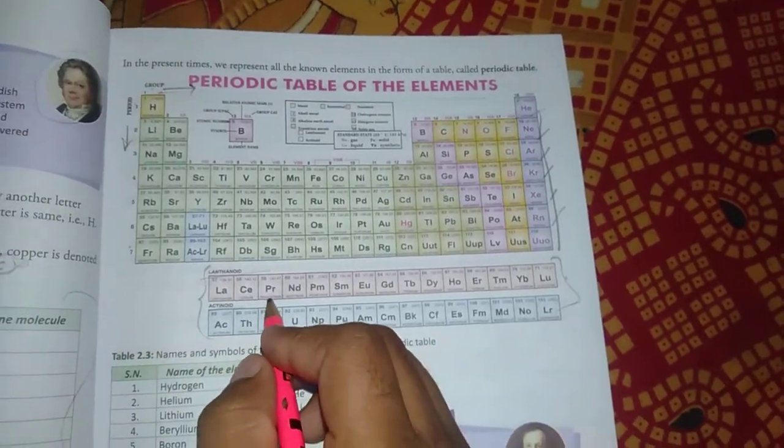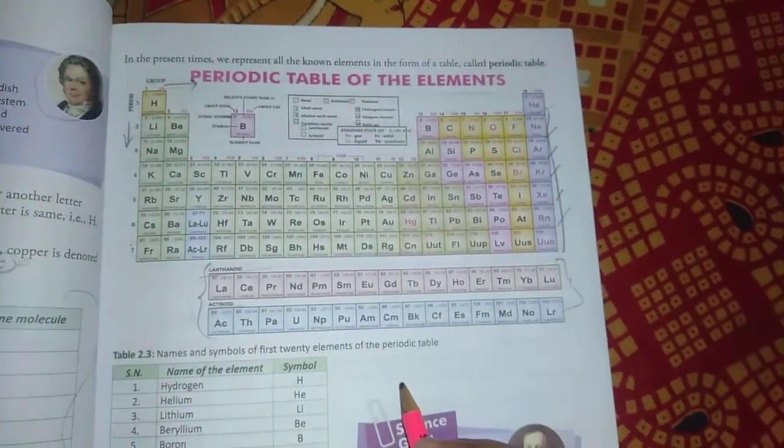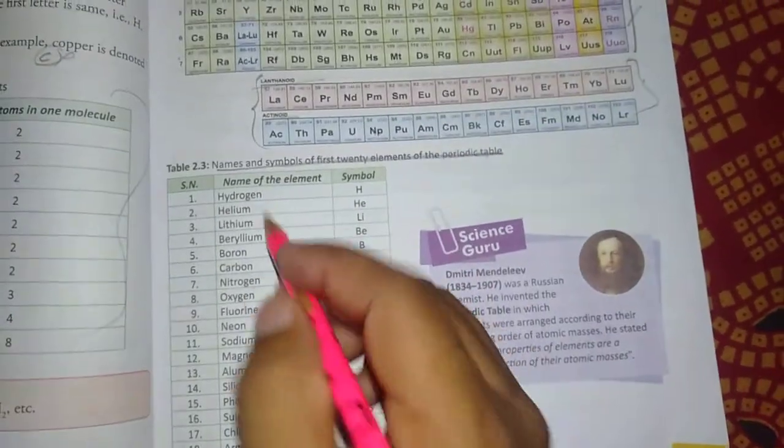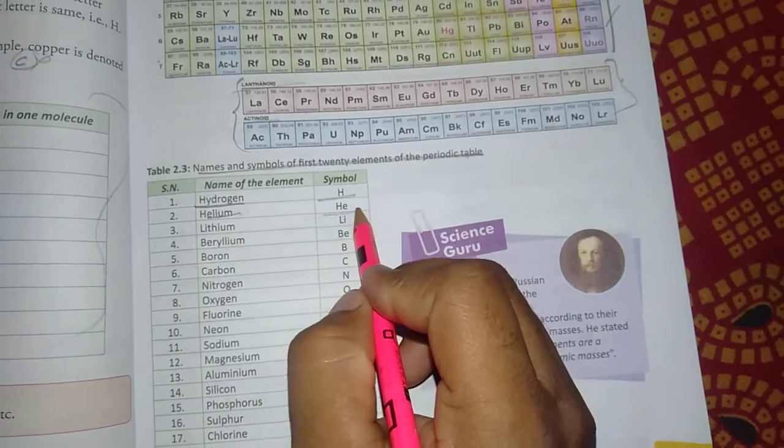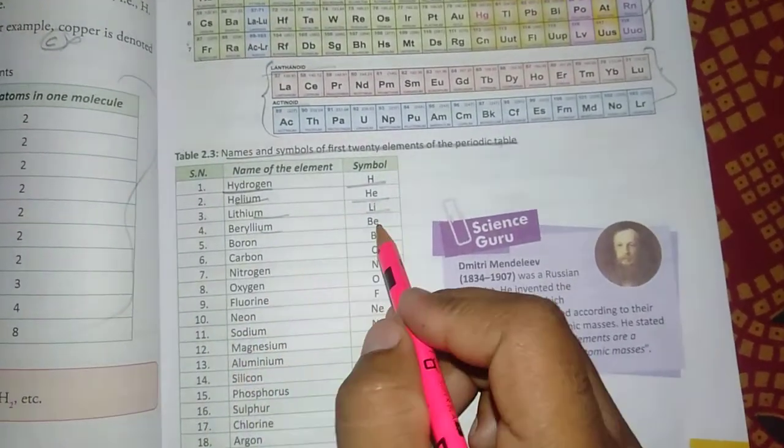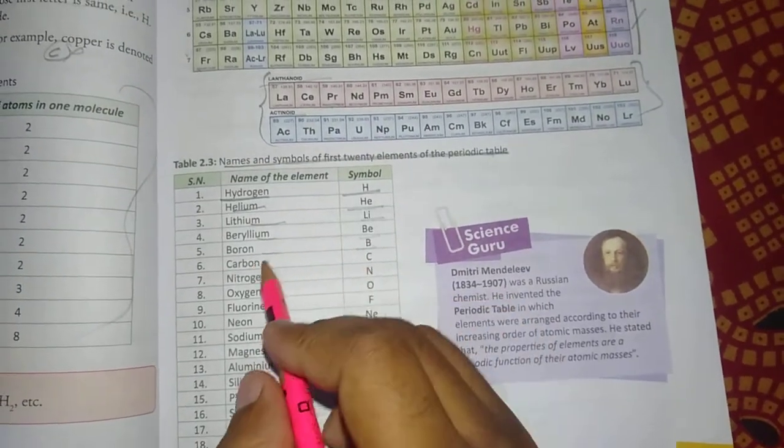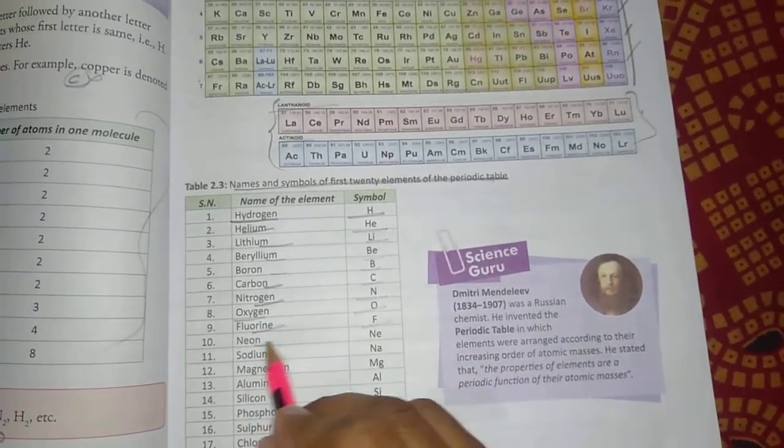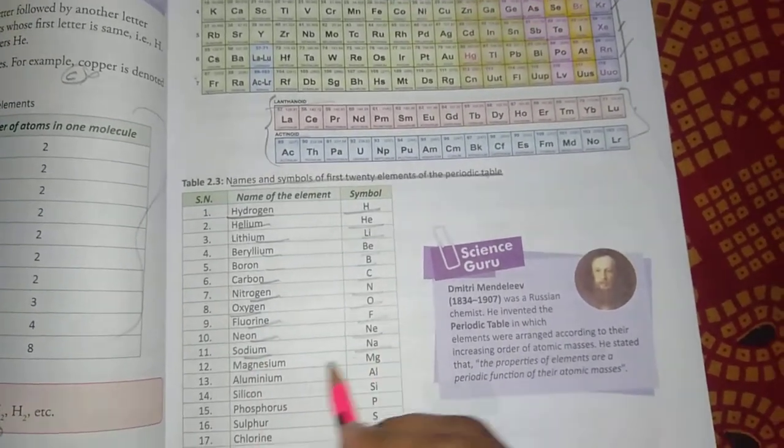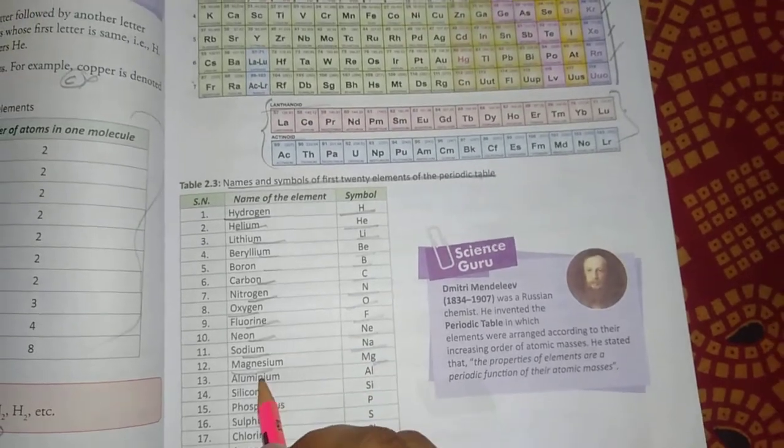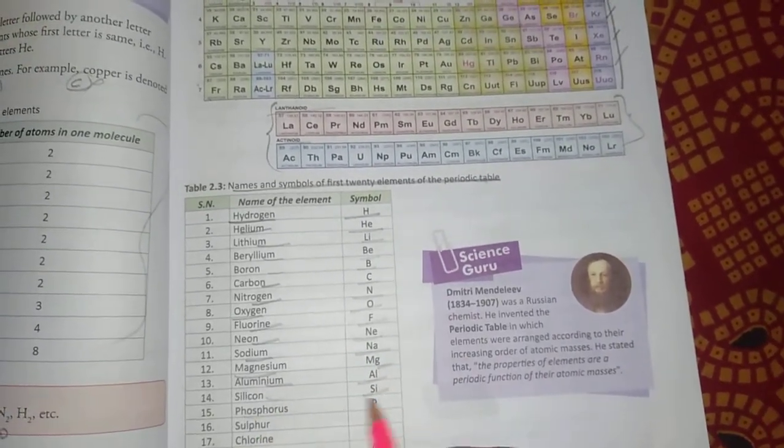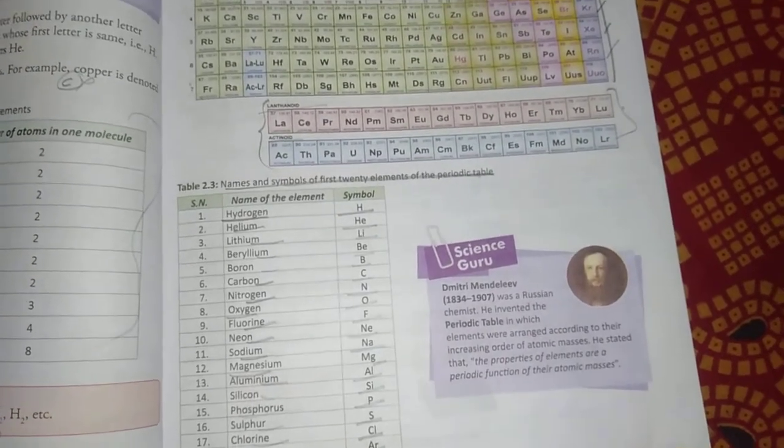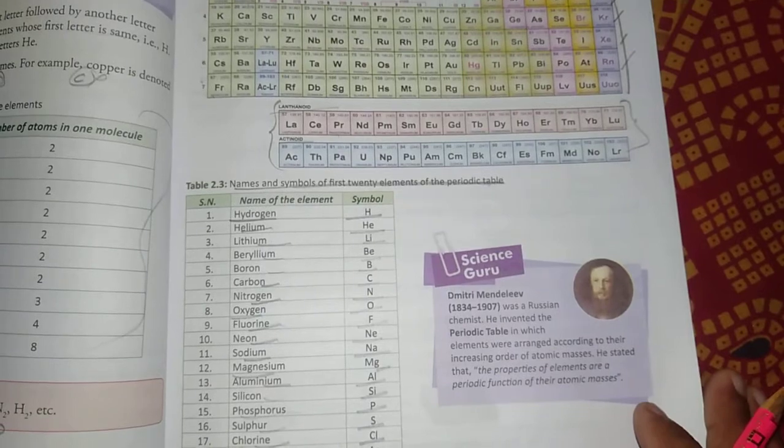There are first 20 elements in the periodic table: Hydrogen H, Helium He, Lithium Li, Beryllium Be, Boron B, Carbon C, Nitrogen N, Oxygen O, Fluorine F, Neon Ne, Sodium Na, Magnesium Mg, Aluminum Al, Silicon Si, Phosphorus P, Sulfur S, Chlorine Cl, Argon Ar, Potassium K, Calcium Ca.